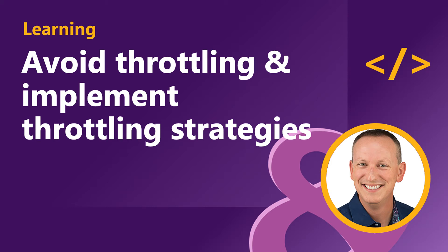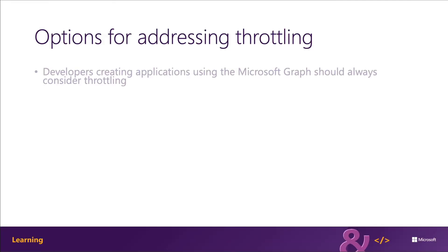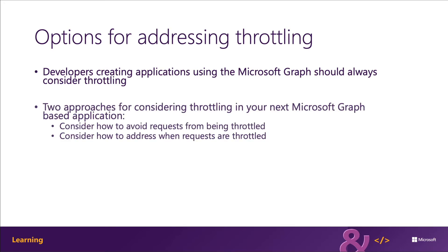In this section, we're going to learn how to implement different strategies in your application to avoid being throttled by Microsoft Graph. If an application relies on external services that implement request throttling or rate limiting, the developers should incorporate it into the application design. There are two approaches to consider when building an application that relies on Microsoft Graph to address throttling scenarios.